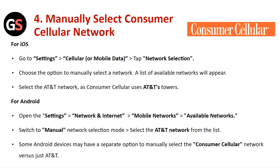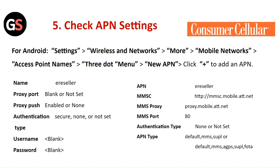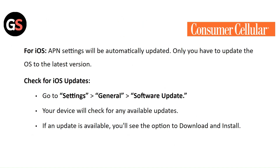Check APN settings. For Android, go to Settings, then click on Wireless and Networks. Go to More and select Mobile Networks. Click on Access Point Name and tap on the three-dot menu. Click Add to add a new APN. For iOS, APN settings will be automatically updated — you only need to update the OS to the latest version.